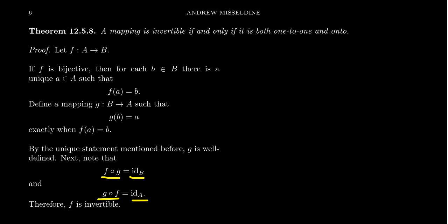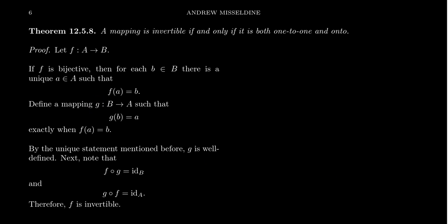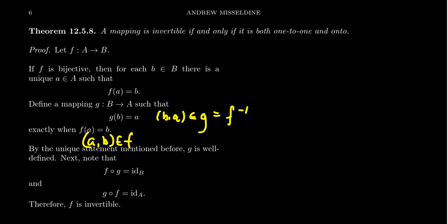To see this: if you take g of f of a, f(a) maps to some b, and by definition g maps b to the unique element that mapped onto it by f, which is a. In the other direction, f of g of b — g maps b to the element a that maps onto b via f, and then f sends that back to b. By construction, these are inverses. Specifically, g is the inverse relation of f — we just switched all the ordered pairs. When (a, b) is in f, we say (b, a) is in g, making it the inverse. Because of bijectivity, this relation is well-defined and gives us a function.